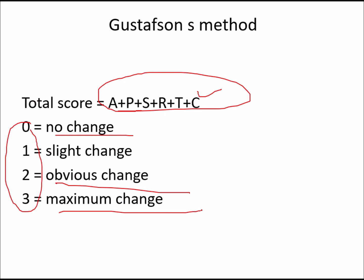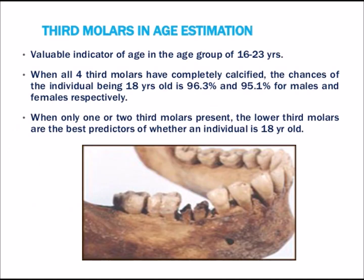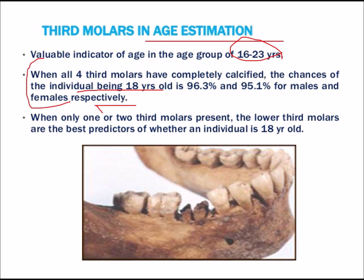The third molar is a valuable indicator for age between 16 to 23 years. When all four third molars have completely calcified, the probability of an individual being 18 years old is 19.3% for males and 95.1% for females. Lower third molars are the best predictors of whether an individual is 18 years old or not.